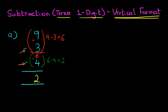So 9 minus 3 minus 4 equals 2. And it really is that simple. Now let's look at our second example.